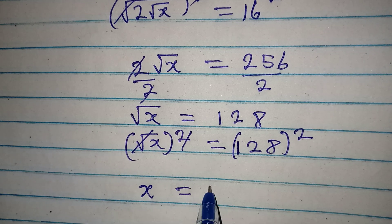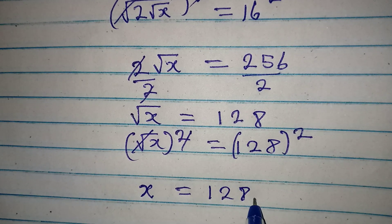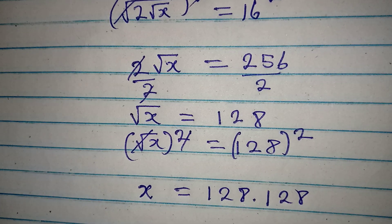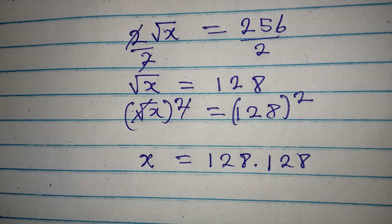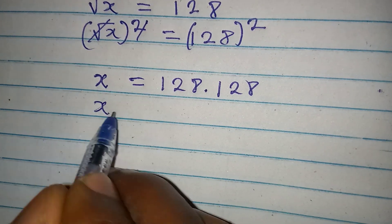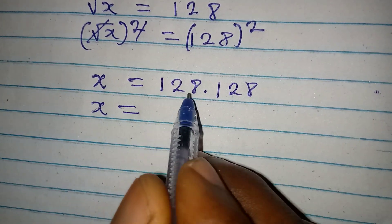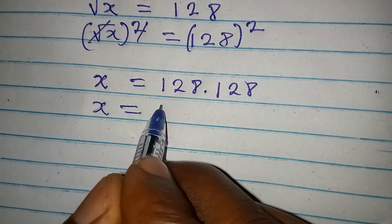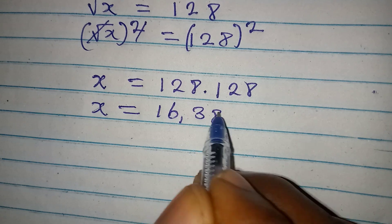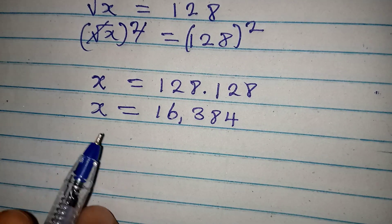Which will be equal to 128 multiplied by 128. So if you multiply this, this means that our X is equal to 16,384. So this is the value of X.